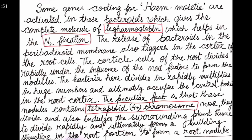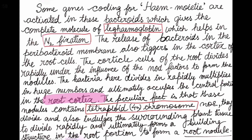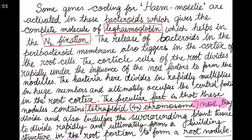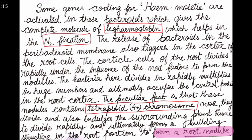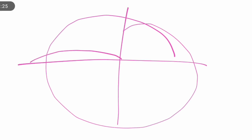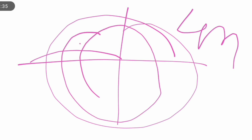The bacteria divide rapidly in the root cortex. A very peculiar fact is that these nodules contain tetraploid (4N) chromosomes. The bacteria also stimulate the surrounding plant tissue to divide rapidly, contributing to building the structure of the root nodule. This tetraploid structure divides completely and also drives division of the surrounding plant tissue.